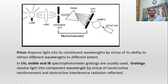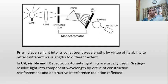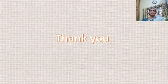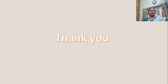A prism disperses light into its constituent wavelengths by virtue of its ability to refract different wavelengths to different extents. In UV-visible and IR spectrophotometers, gratings are usually used. Gratings resolve light into component wavelengths by virtue of constructive reinforcement and destructive interference of reflected radiation. That is all for today's class. Thank you.